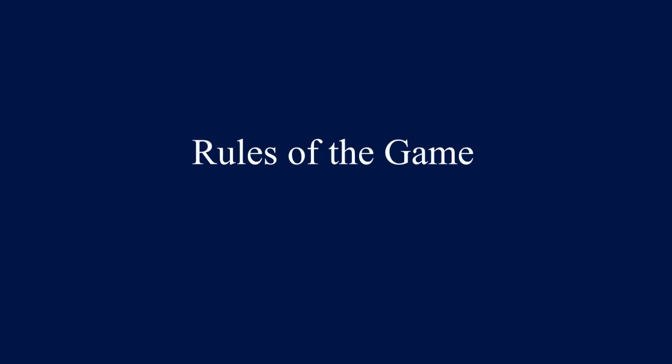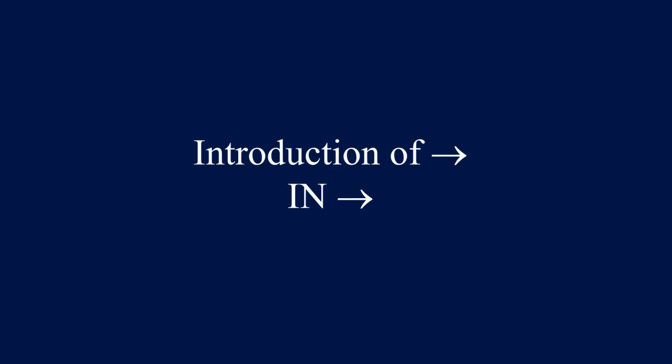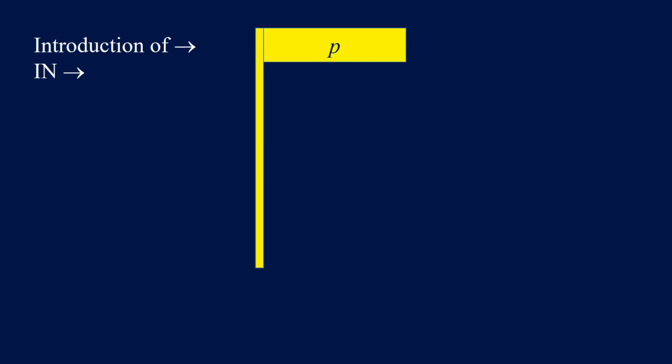The rules of the game. Introduction of implication — we're going to use IN implication in the reasoning. If you have the premise P in the flag and we get Q somewhere under the flag, then we can conclude P implies Q under the pole.